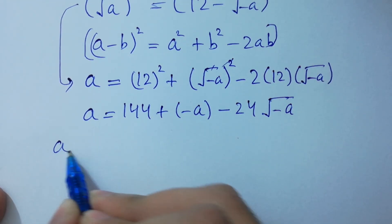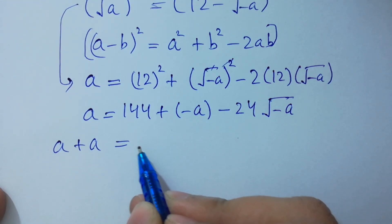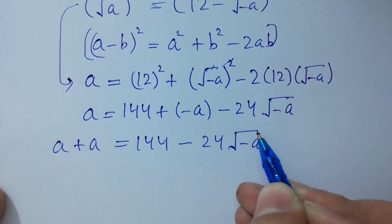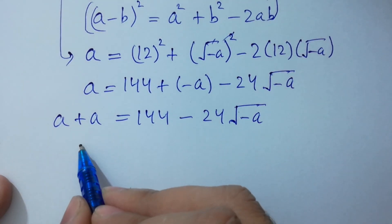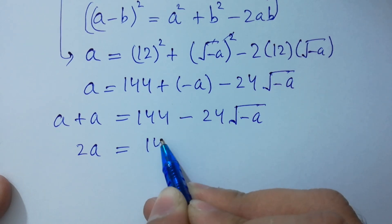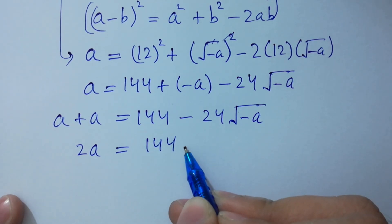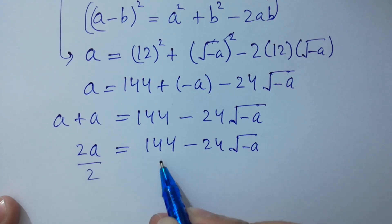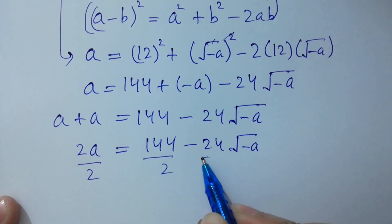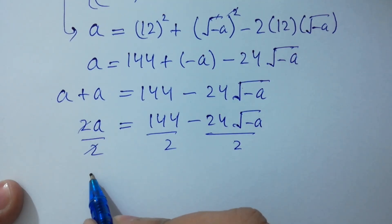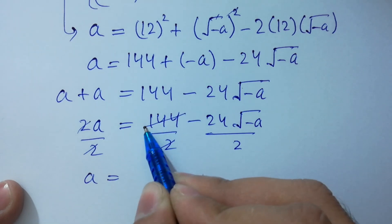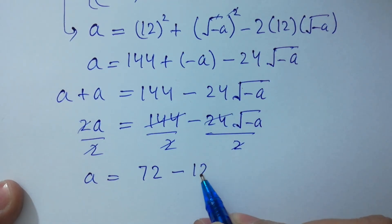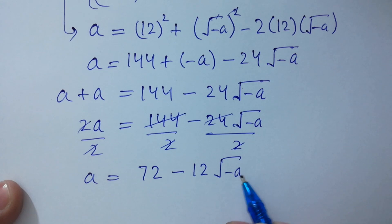Minus a on the left side becomes plus a. We have a plus a equal to 144 minus 24 square root of minus a. A plus a is 2a equal to 144 minus 24 square root of minus a. Divide both sides by 2: a equal to 72 minus 12 square root of minus a.